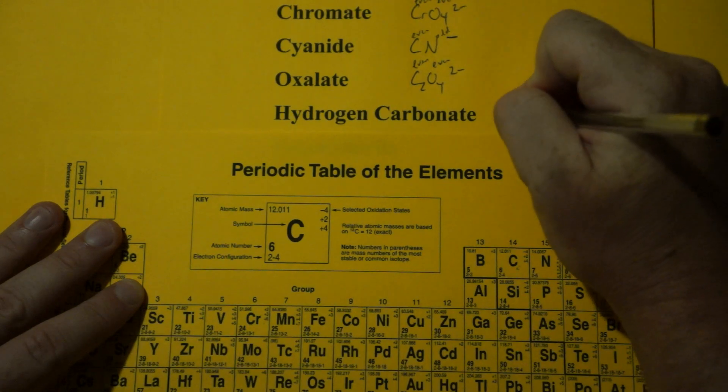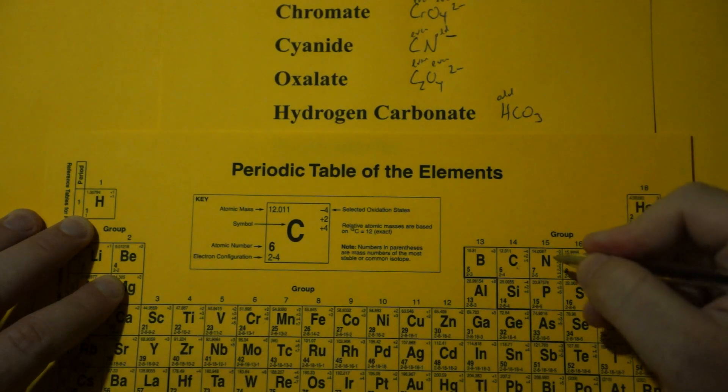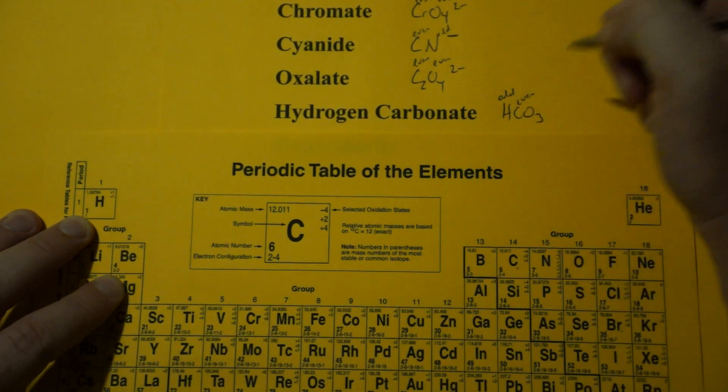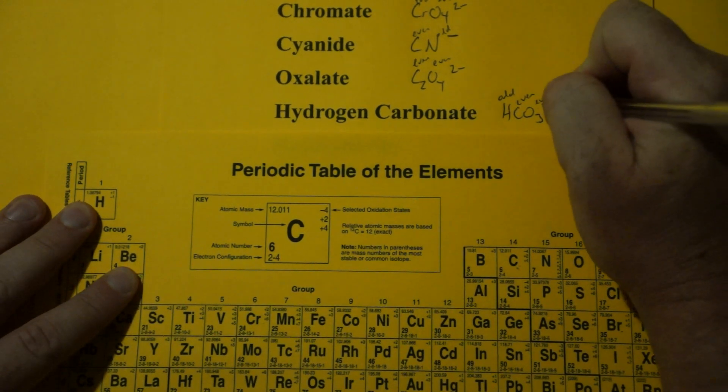Hydrogen carbonate. HCO3. Hydrogen is in group 1. That's odd. Carbon's in group 14. That's even. Oxygen is in group 16. Those are evens. Even and an even plus an odd is an odd. The charge is minus 1.